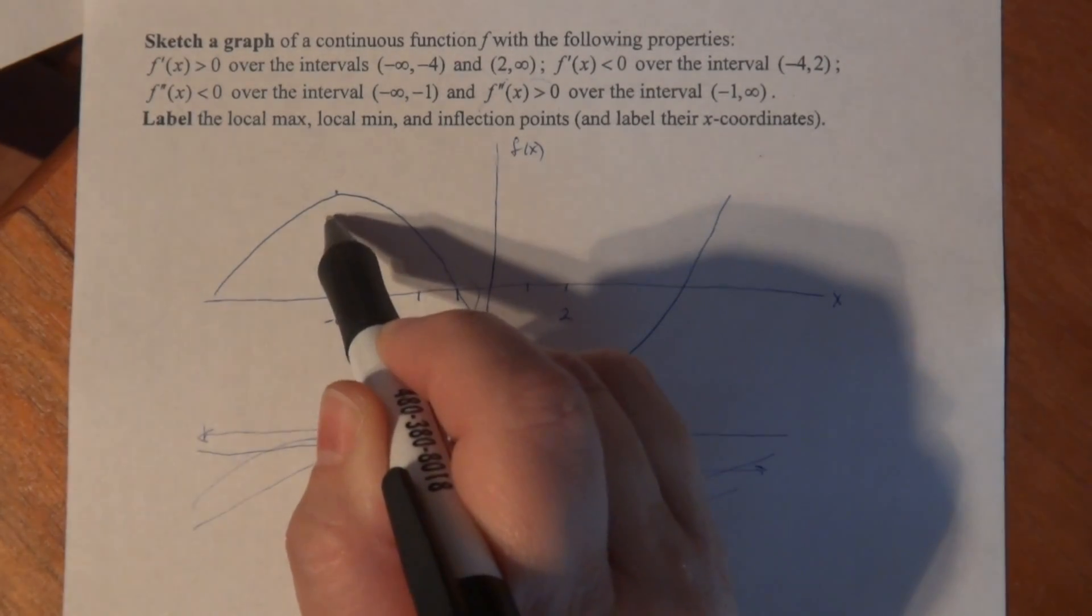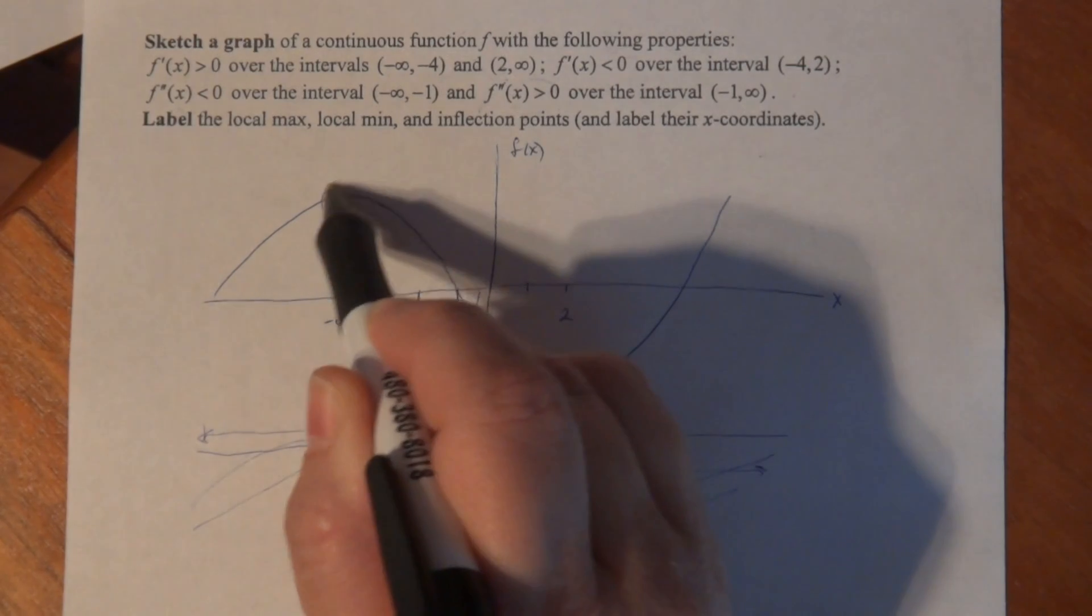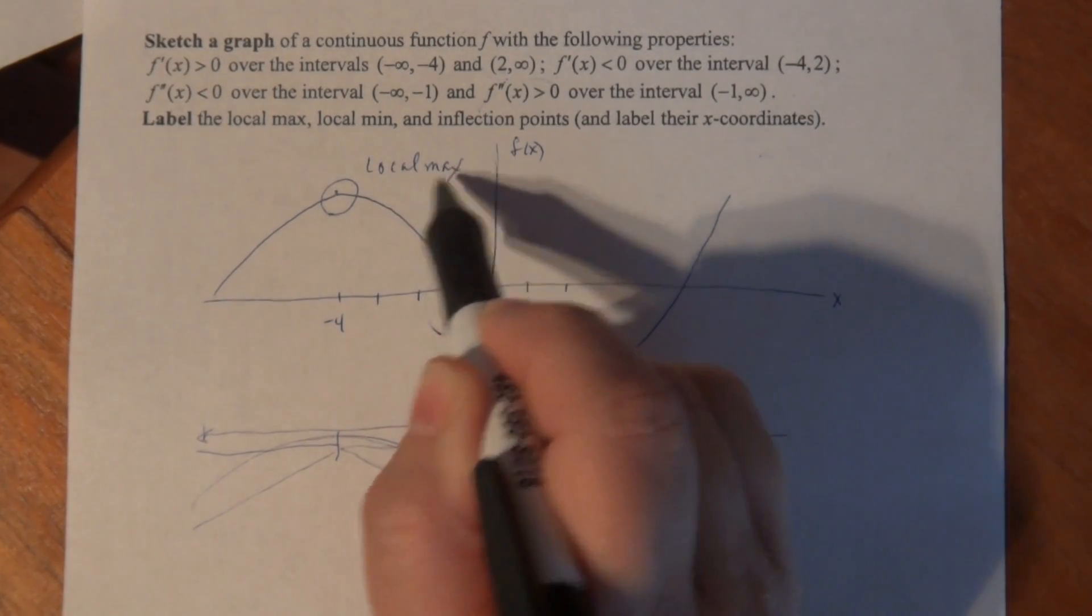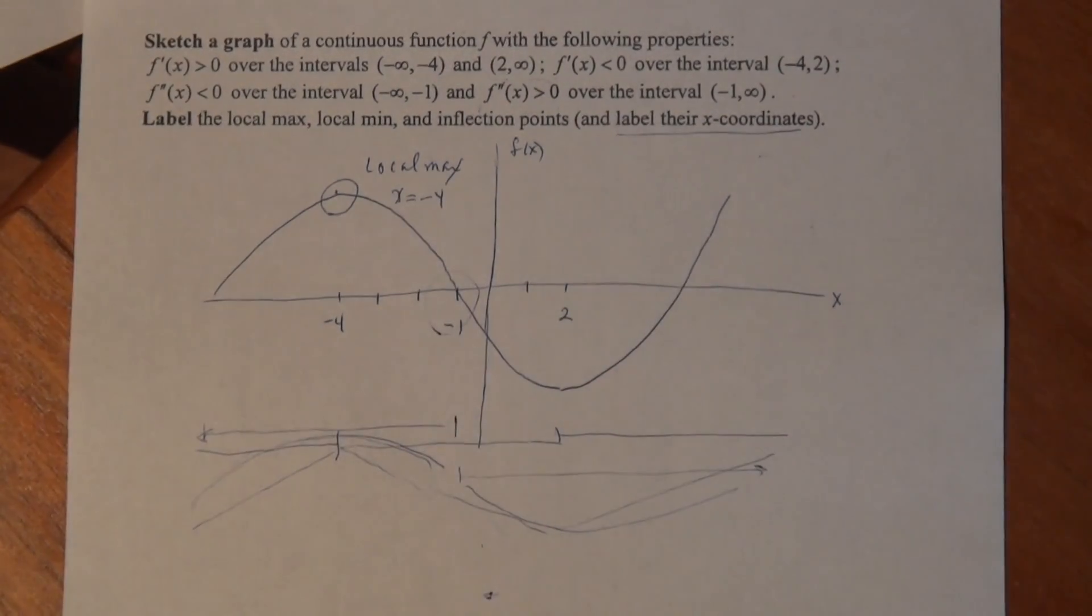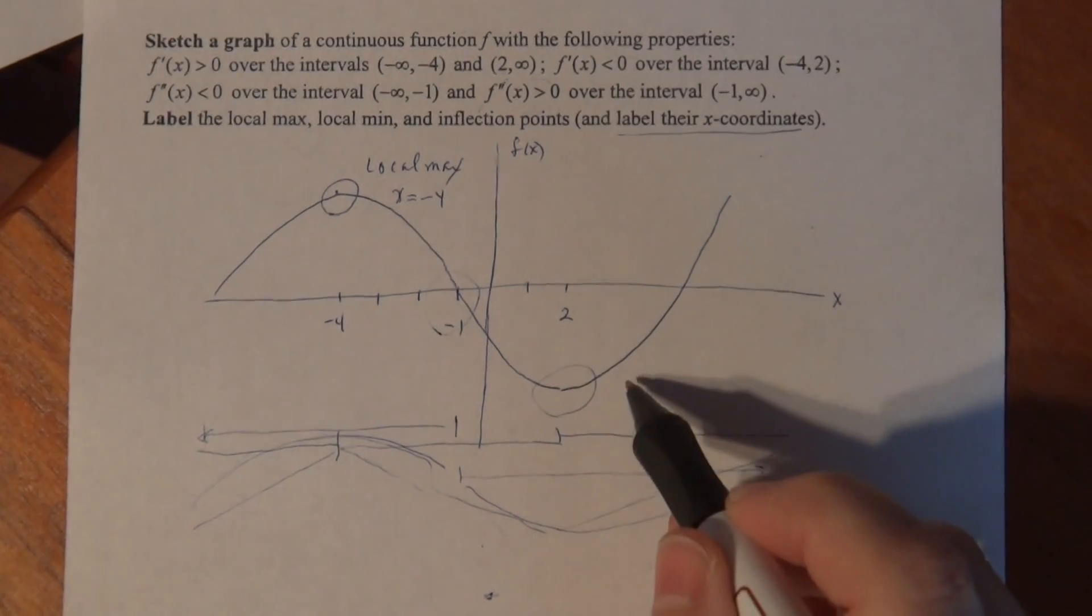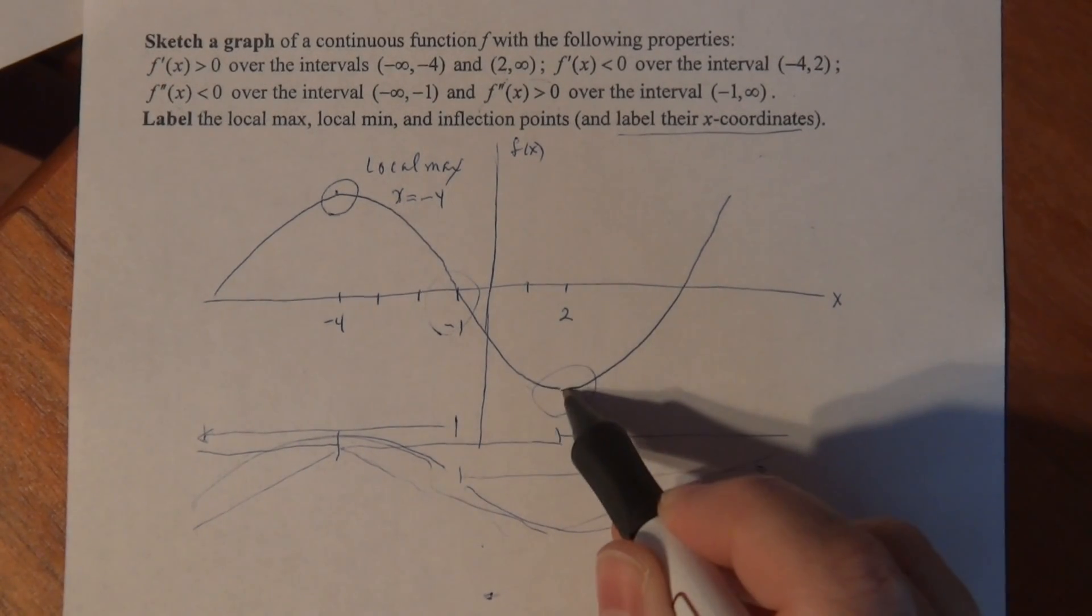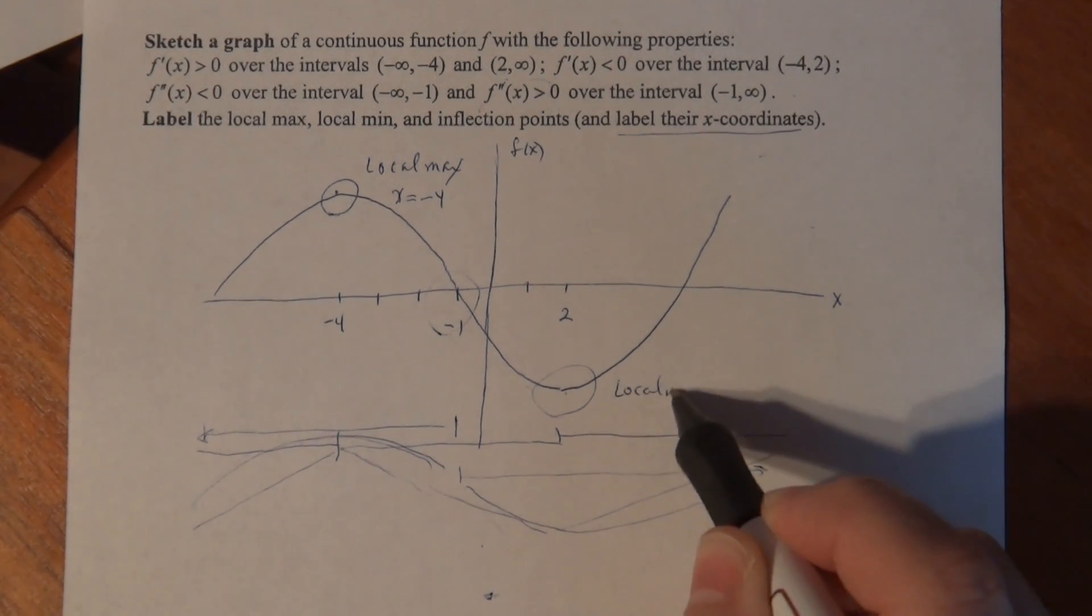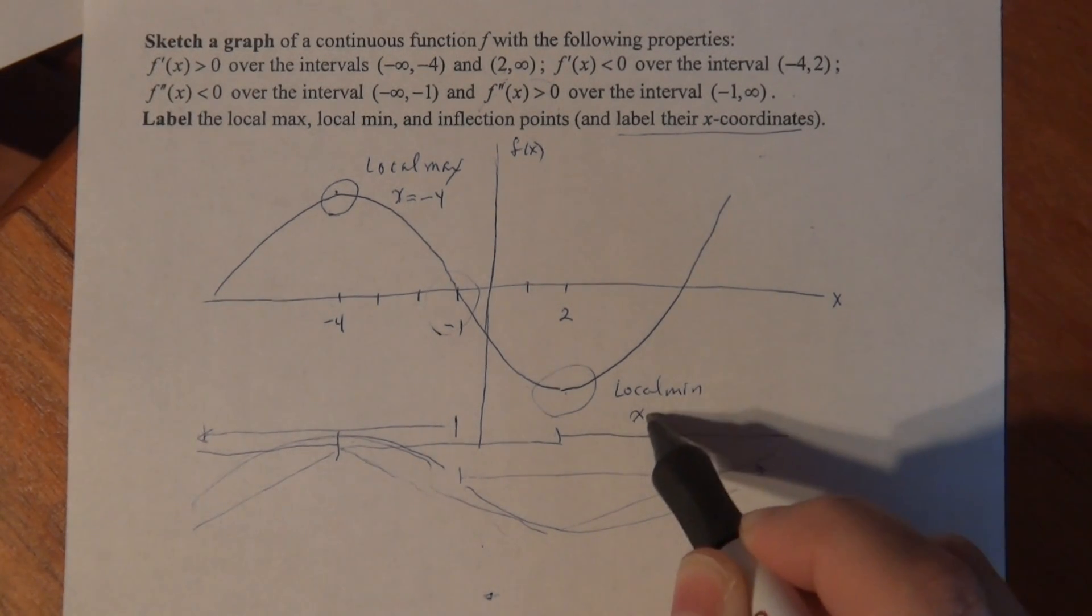So here at negative 4, it looks like I have a complete hill. So that's a local max, and that occurs at x equal negative 4 since I have to label x-coordinates. This right here is my local min. It's a complete valley. That's the lowest point in that neighborhood. So this is a local min at x equal 2.